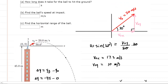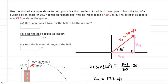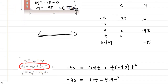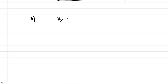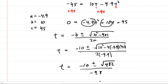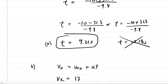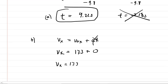Part B asks for the ball's speed at impact. We fill in the time we just found in our table — the time is the same in both the x and y directions. To get the final speed we need the final velocity in both directions. Using the first kinematic equation for the x direction: final velocity equals initial velocity in x plus acceleration times time. The initial velocity was 17.3 m/s and the acceleration is zero, so the entire second term drops out. Therefore, the final velocity in the x direction is positive 17.3 meters per second.